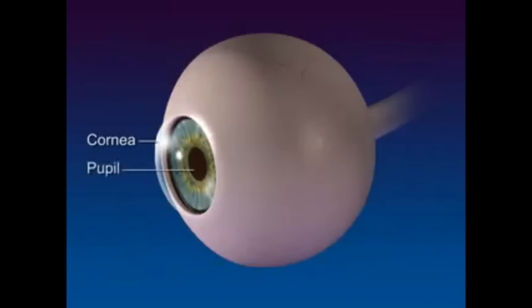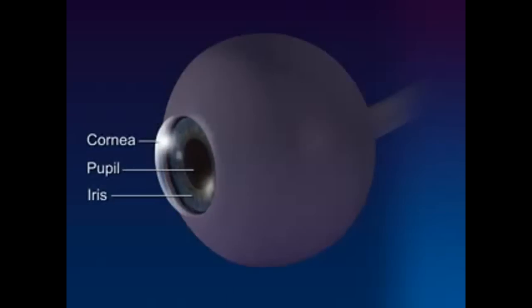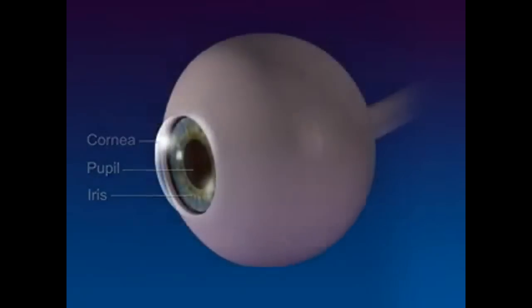The pupil is the circular opening in the front of the choroid. The iris is the colored smooth muscle surrounding the pupil, which adjusts the size of the opening according to the brightness of light.